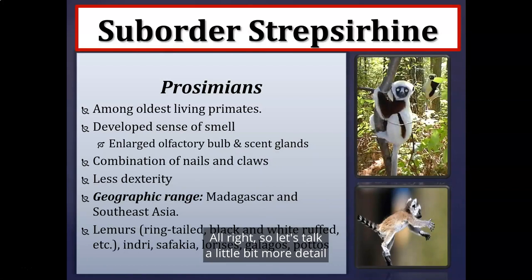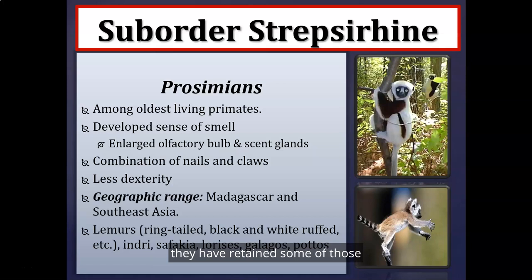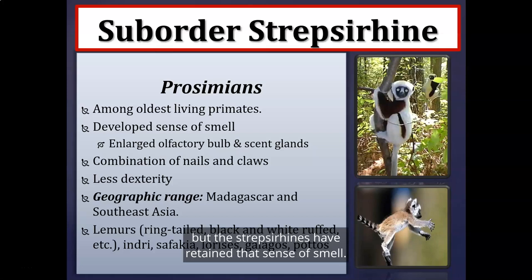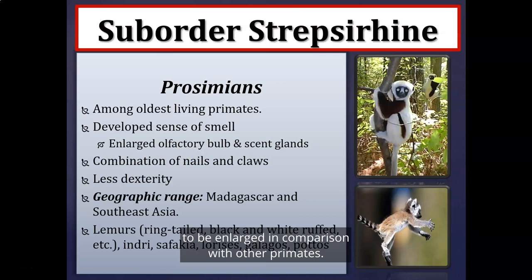Strepsirhines, also called prosimians, are among the oldest of all living primates. Being the most primitive, they have retained more primitive characteristics. Most primates rely on vision and touch, but strepsirhines have retained a strong sense of smell — consequently the olfactory bulb and scent gland are enlarged. They have a combination of nails and claws rather than predominantly nails, giving them slightly less dexterity.